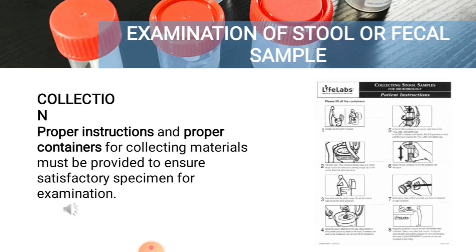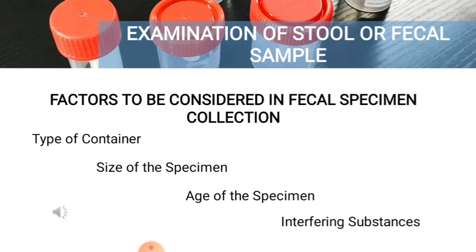Now let us proceed to the collection proper. Proper instructions and proper containers for collecting materials must be provided to ensure a satisfactory specimen for examination. Patients who have little knowledge of proper procedures often make the collections; therefore, complete and thorough directions should be given to the person responsible. The most common method of diagnosis of intestinal parasites is through the demonstration of eggs, larvae, adults, trophozoites, cysts, or oocysts in the stool. There are various factors to consider in fecal specimen collection.